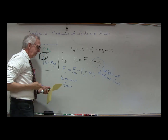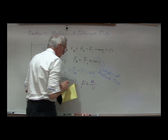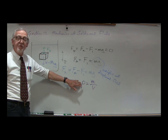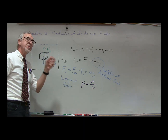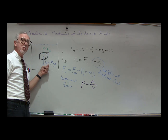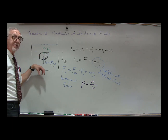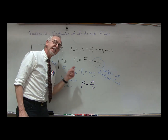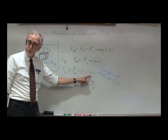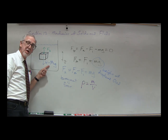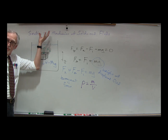Which force is bigger? Remember, density equals mass per volume. If the density of the object is greater than the density of the water, then the mass of the block will be greater than the mass of the displaced fluid. In that case, the weight of the object is greater than the buoyant force and the object sinks. If the density of the object is less than the density of the fluid, the buoyant force will be greater than the weight of the object, and the object will go up — it will float.